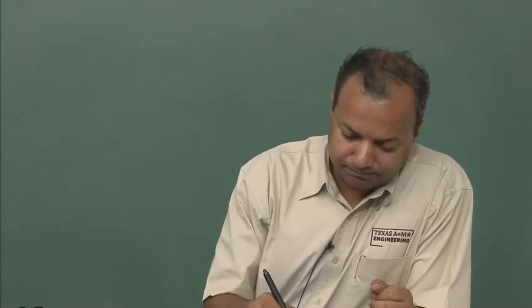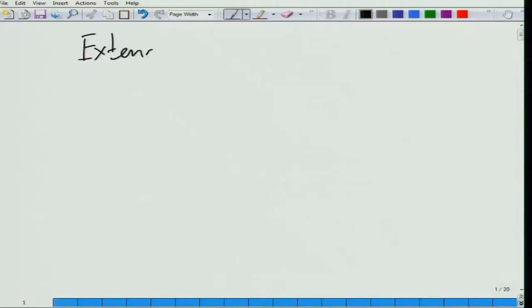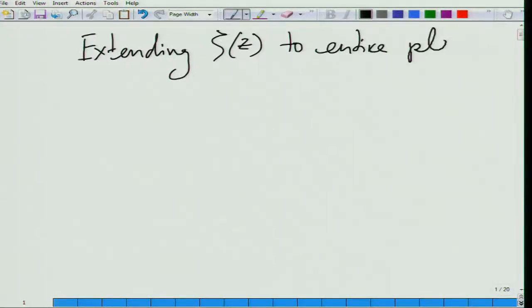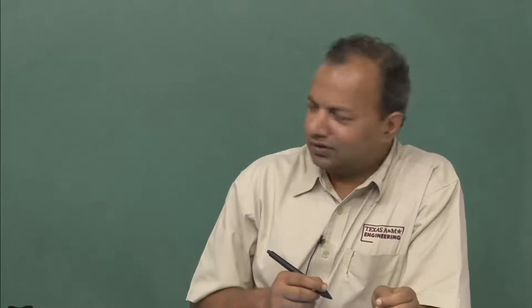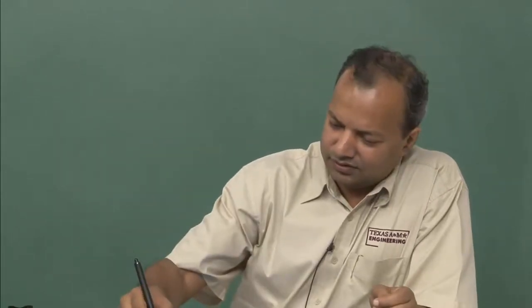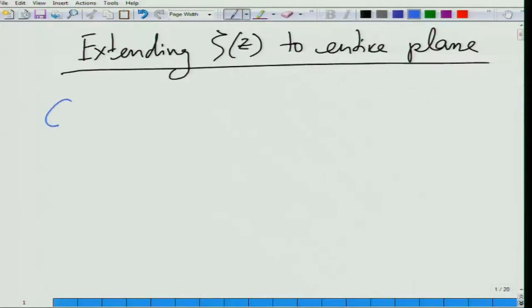Today we look at this: how to extend the zeta function to the entire complex plane. In order to do that, we will take a short detour, but we have to take a detour and introduce a familiar function — the gamma function.